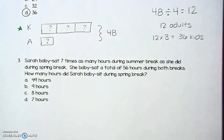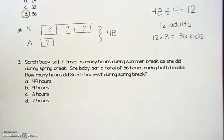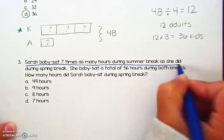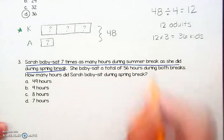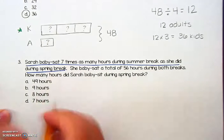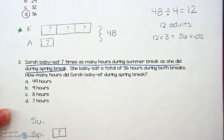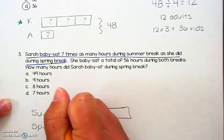Let's look at one more example together. This one says Sarah babysat seven times as many hours during summer break as she did during spring break. Sarah babysat a total of 56 hours during both breaks. How many hours did Sarah babysit during spring break? I can totally relate to this story problem because I did a lot of babysitting in high school. It makes sense that she would babysit more over the summer than spring break because summer is a lot longer. I'm going to underline the first sentence. I see that comparison phrase again — I don't know the spring break hours, I don't know the summer break hours, but summer break was seven times as much. So I have a summer break and a spring break. Since spring break was fewer hours, I'm going to give that the mystery number, and summer break gets a long rectangle made up of seven groups.